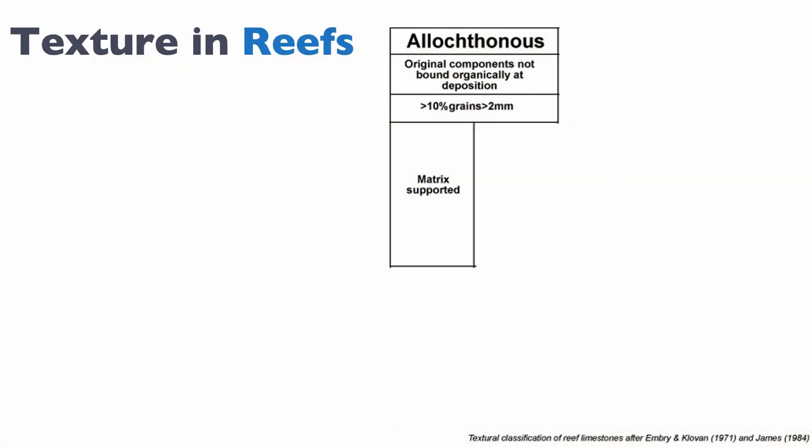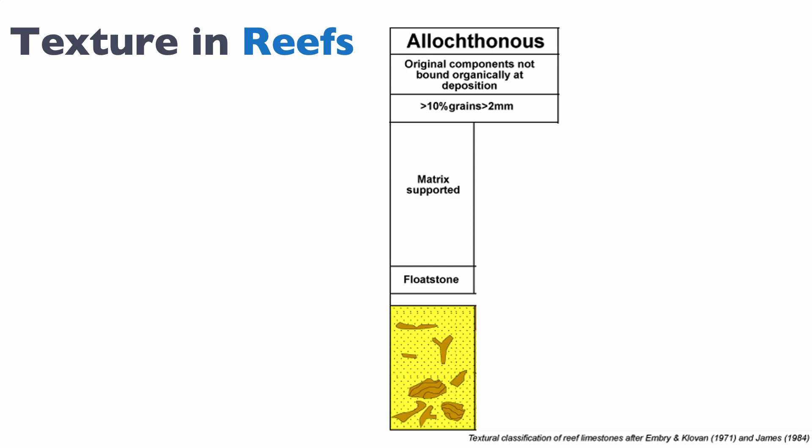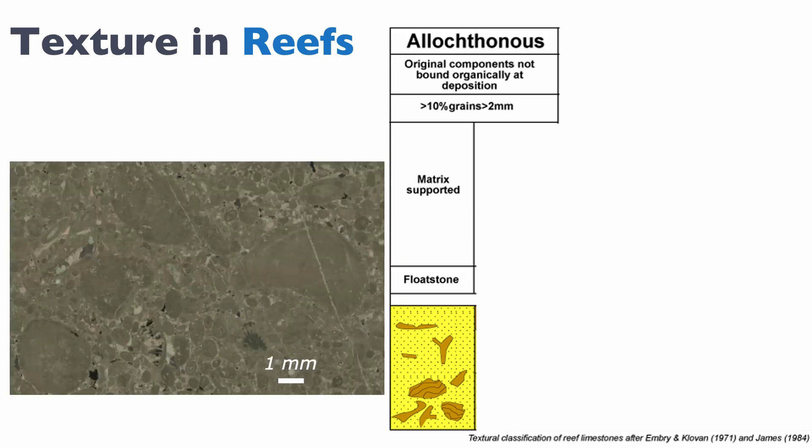If you do have more than 10% grains larger than 2mm, the next question is whether you are matrix-supported or grain-supported — in other words, whether grains smaller than 2mm support your framework or grains larger than 2mm support your framework. If you are matrix-supported, supported by grains smaller than 2mm, then we talk about a floatstone. The large grains float in the matrix, hence the term floatstone.